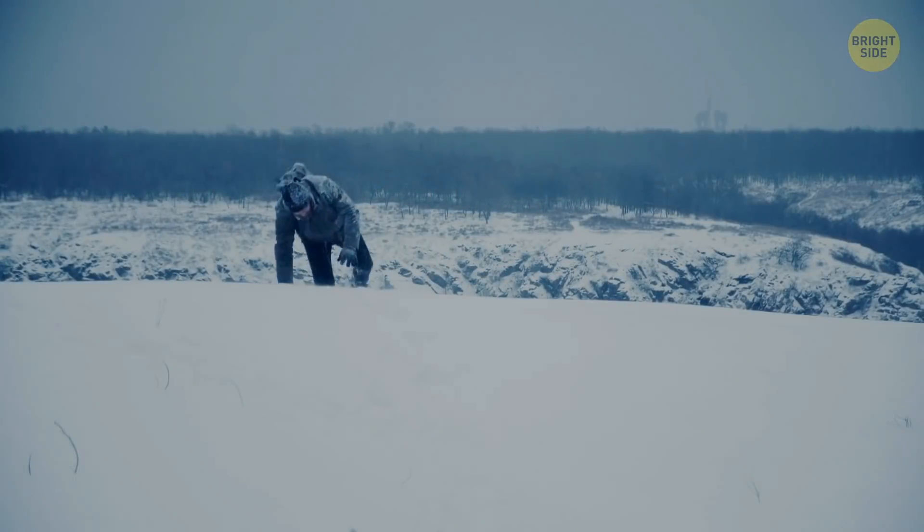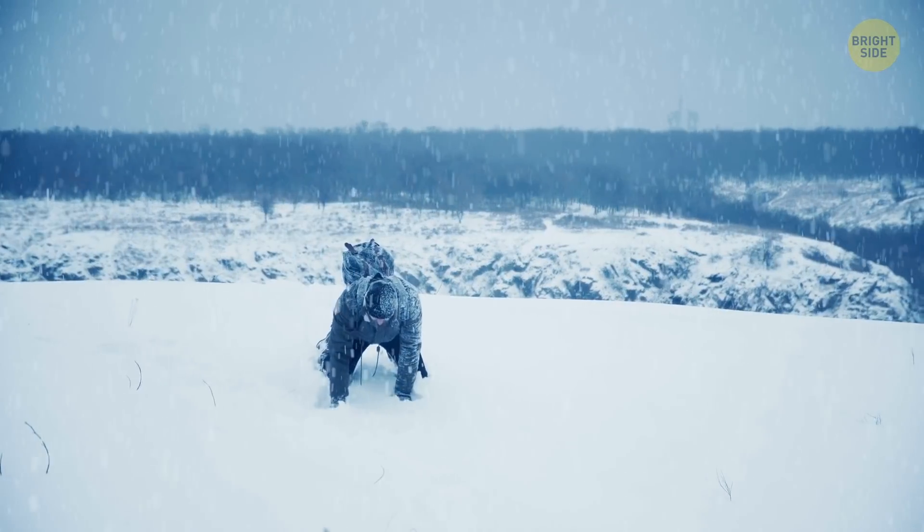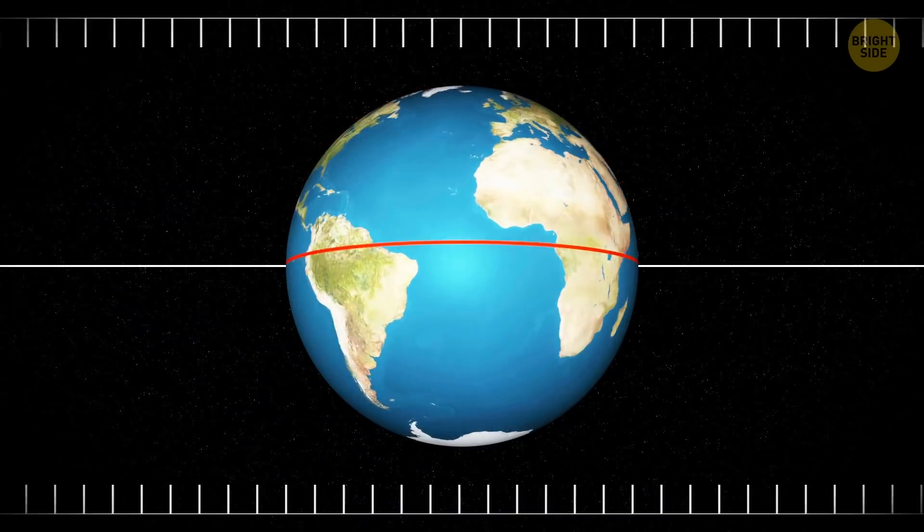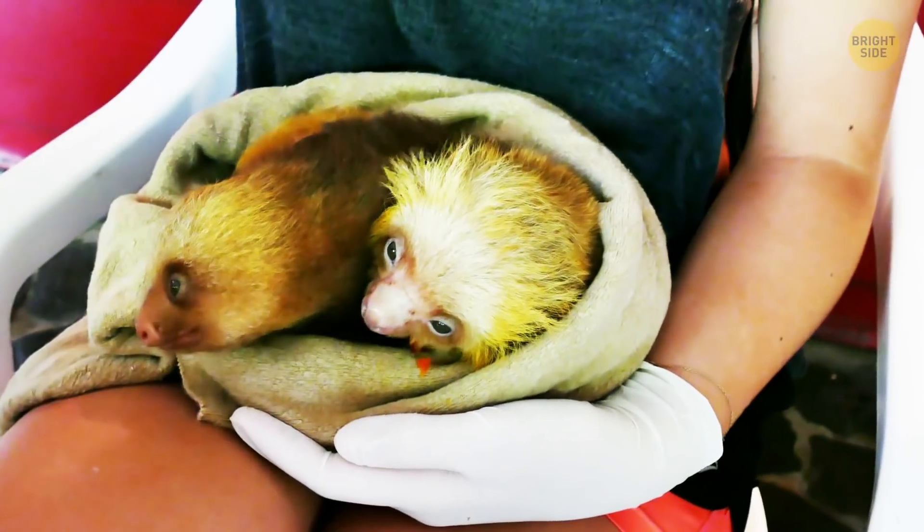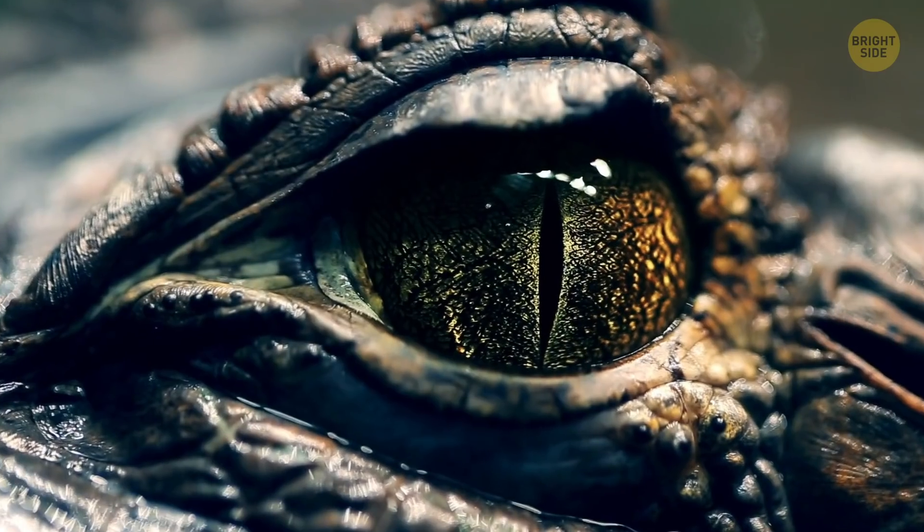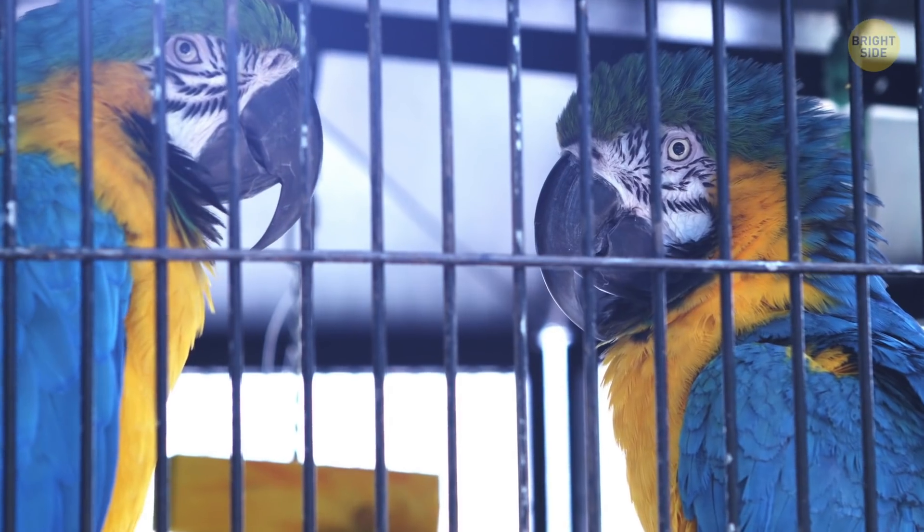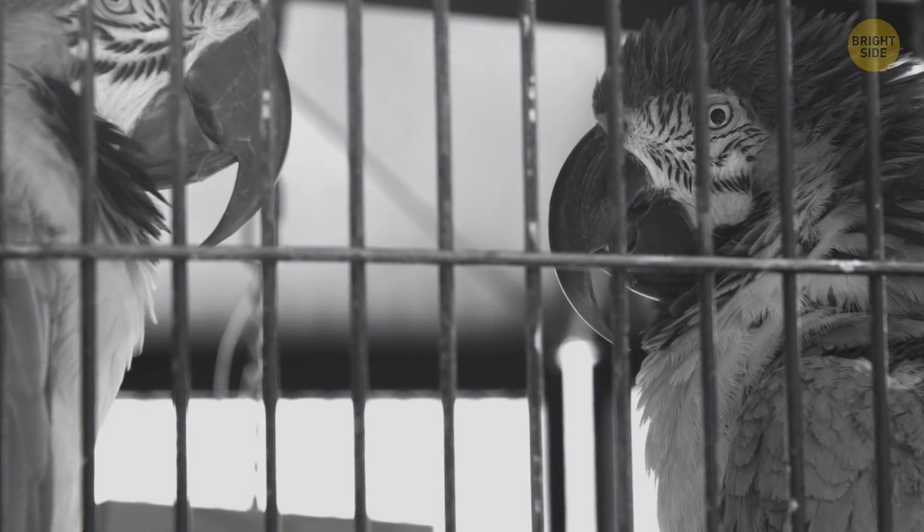At first, it became impossible to live too close to the North and the South Poles. People started migrating closer to the equator. Many animals and plant species were going extinct, despite all human attempts to save them in special zoos and greenhouses.